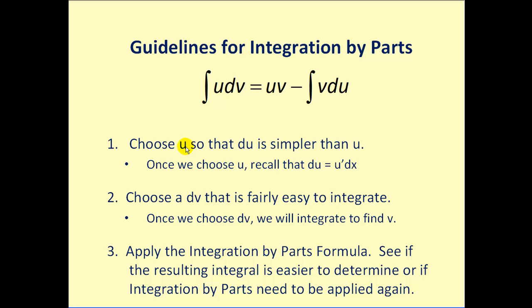There are some guidelines for choosing u and dv. Normally we want to choose u so that du is simpler than u. And we will find du by finding the derivative of u times dx.